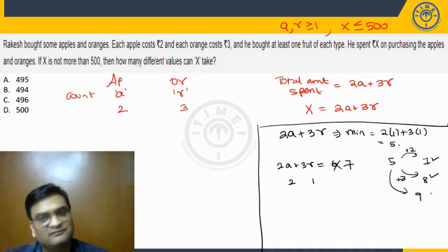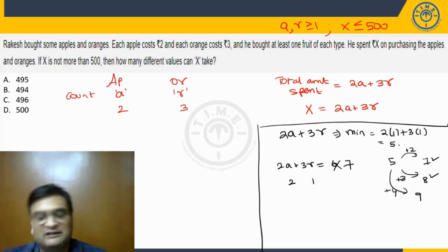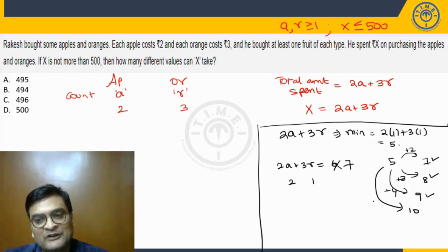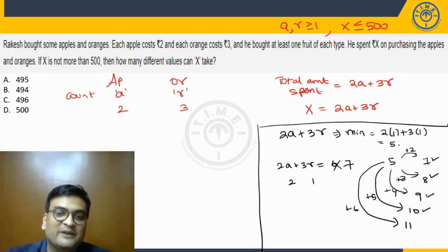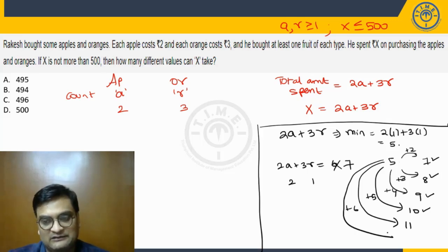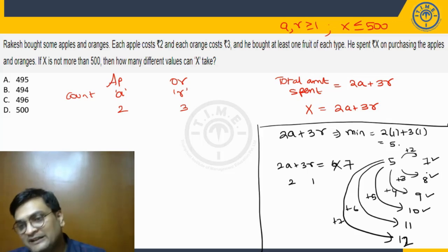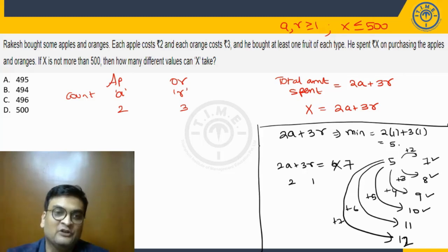If you want to make it 9, you want to increase this value by 4, that's very much possible. You increase A by 2. You want to make it 10, you need to increase it by 5. Simple, increase A and R both by 1 each. If you want to make it 11, you need to increase by 6, that's also possible. You either increase A by 3 or R by 2. For 12, you need to increase this value by 7. How do we make it 7? Simple, you increase A by 2 and R by 1. So this way, any value beyond 7 is possible.